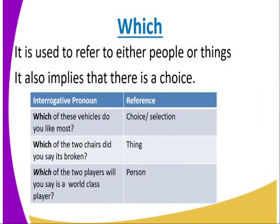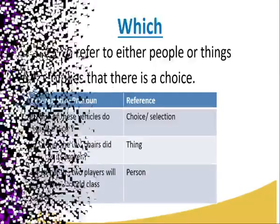'Which' is used to refer to either people or things. It also implies that there is a choice or selection. For example: 'Which of these vehicles do you like most?' — it gives you a choice. 'Which of the two chairs did you say is broken?' — it's a thing. 'Which of the two players will you say is a world-class player?' — it's being referred to a person.